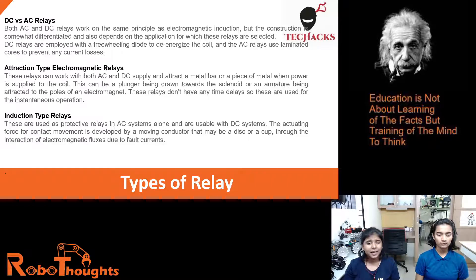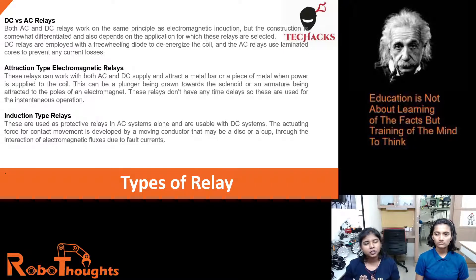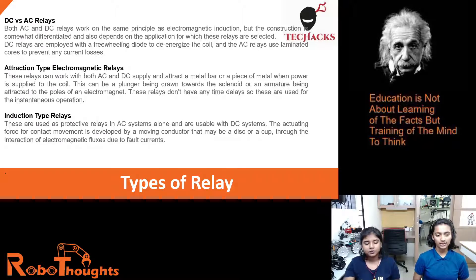Attraction type electromagnetic relays can work with both AC and DC supply and attract a metal bar or a piece of metal when power is supplied to the coil. This can be a plunger being drawn towards the solenoid or an armature being attracted towards the poles of an electromagnet. These relays don't have any time delays, so they are used for instantaneous operations.